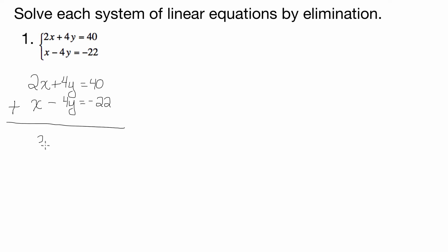So 2x plus x is 3x. Positive 4y plus negative 4y is 0, so we put nothing there. And 40 plus negative 22 is 18. Now, to solve for x: 3x equals 18. Divide both sides by 3, and I end up with x equals 6.